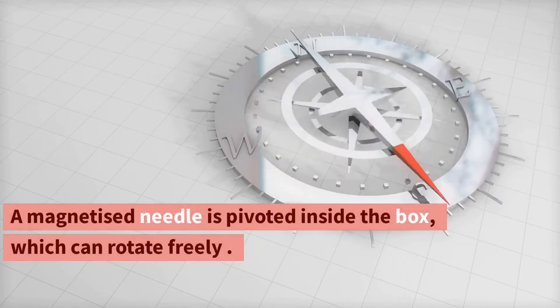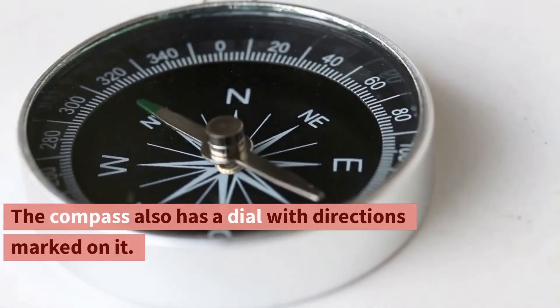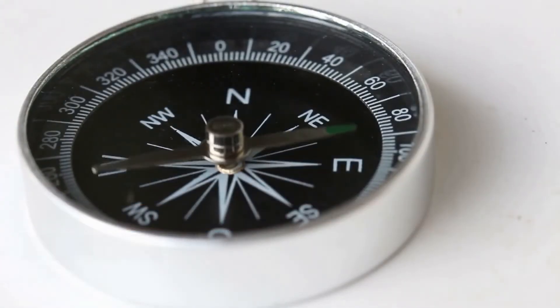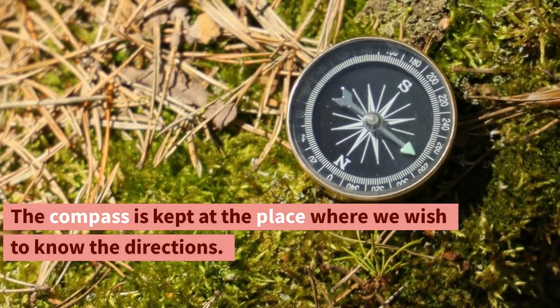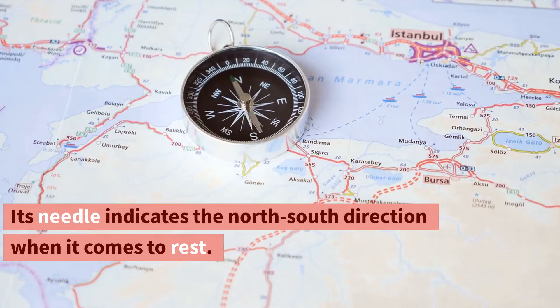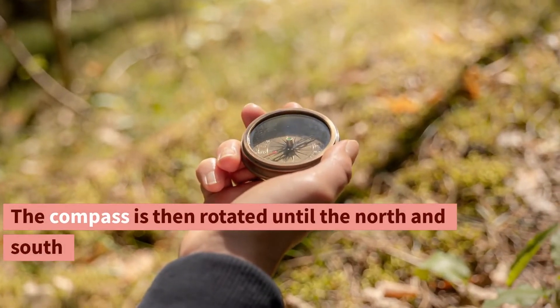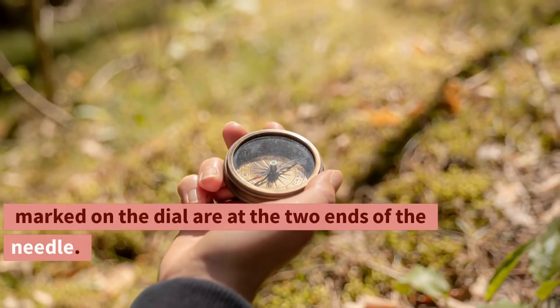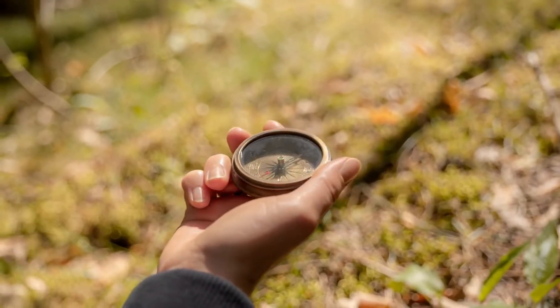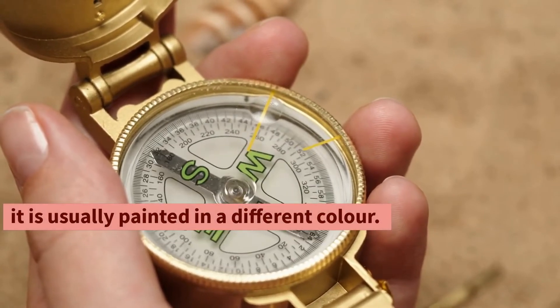The compass is kept at the place where we wish to know the directions. Its needle indicates the north-south direction when it comes to rest. The compass is then rotated until the north and south marked on the dial are at the two ends of the needle. To identify the north pole of the magnetic needle, it is usually painted in a different color.